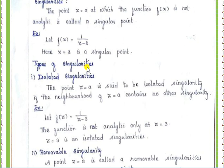There are four types of singularities: isolated singularity, removable singularity, essential singularity, and poles. The first one is isolated singularity. The point z equal to a is said to be an isolated singularity if the neighborhood of z equal to a contains no other singularities, which means the function contains only one singular point.